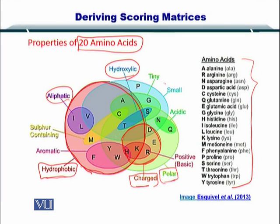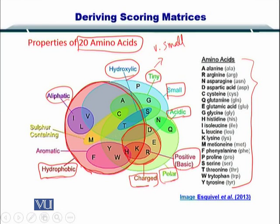Aliphatic, hydroxylic, tiny, basically it means very small. And small here means that larger than tiny, but still very small. And of course, acidic amino acid and basic amino acids here. So these are the different properties of amino acids that make them get substituted or conserved within the protein sequences. So this is very important to understand.